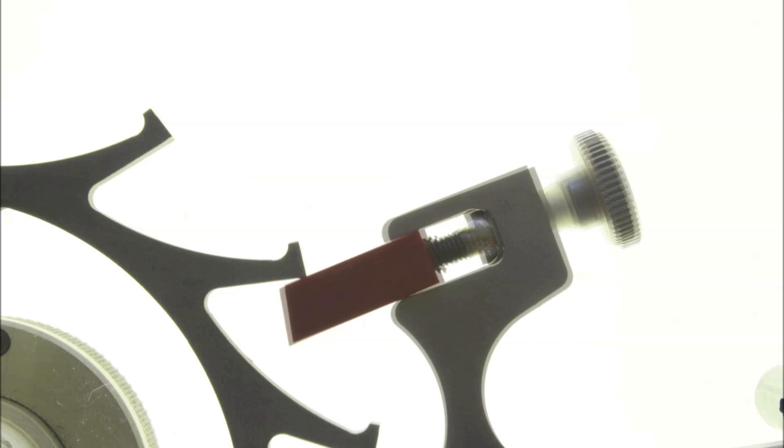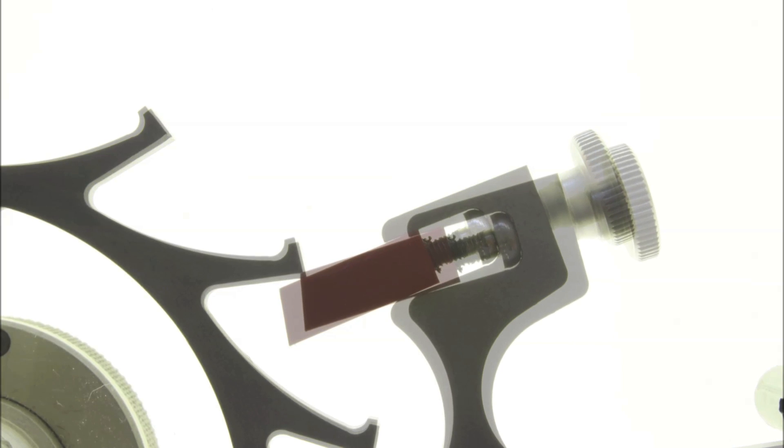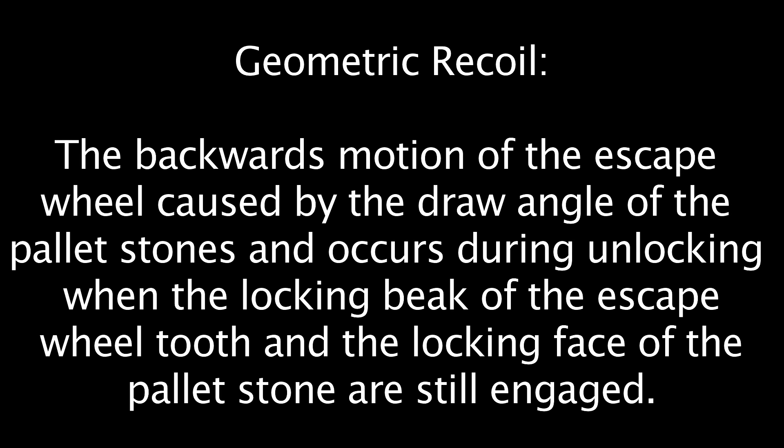The escape wheel recoil that occurs when the pallet is lifted from the point of total lock to the point where the locking beaks break contact is geometric recoil. In other words, geometric recoil is the backward motion of the escape wheel caused by the angle of the pallet stones and occurs during unlocking when the escape wheel tooth and the pallets are still engaged.